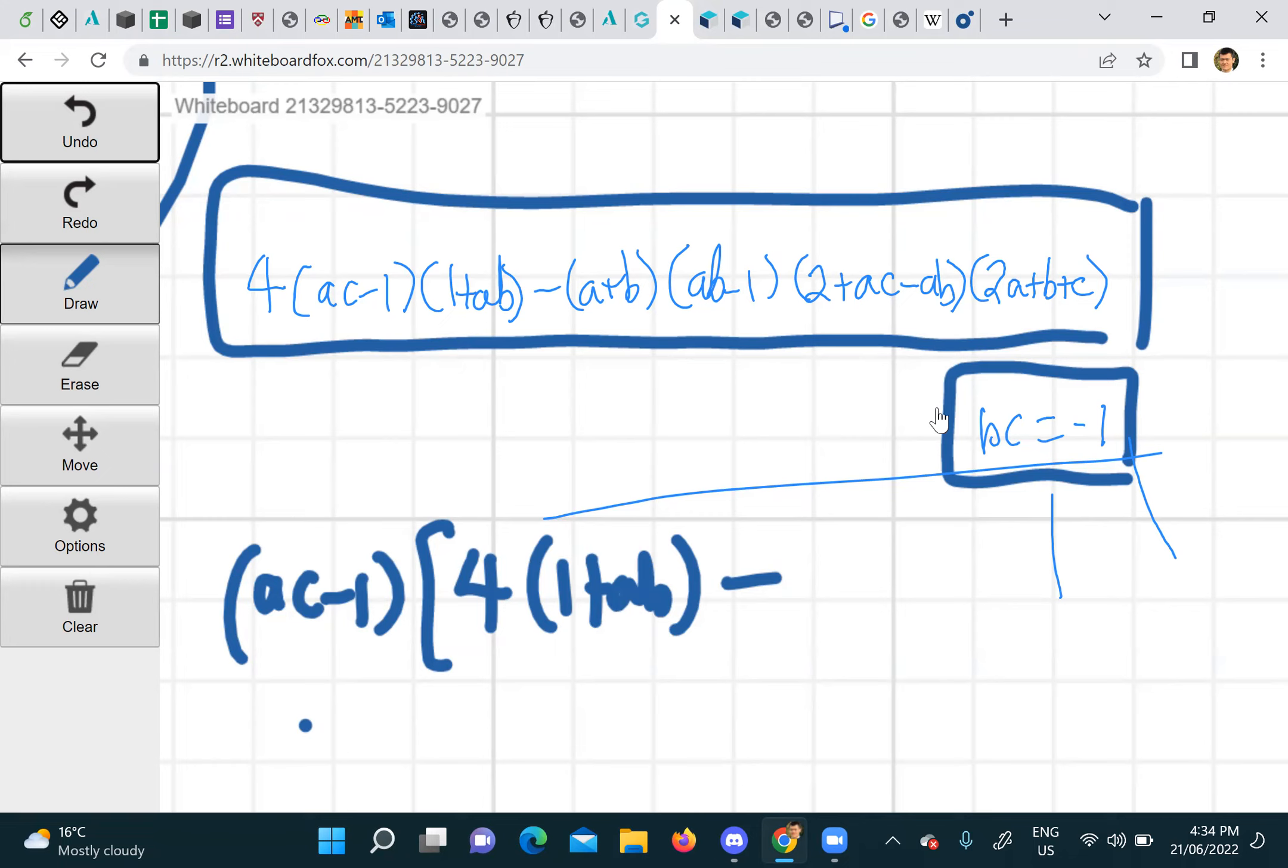All right, so look at (a + b). If you have (a + b) and you times it by c, what do you get? ac plus bc, right. But bc is minus one.